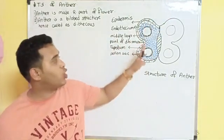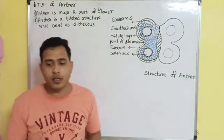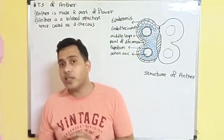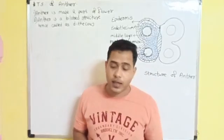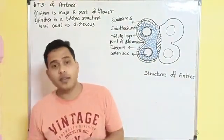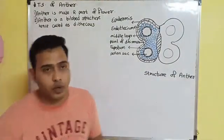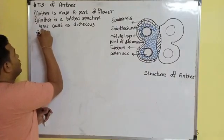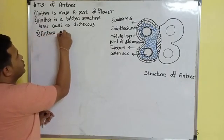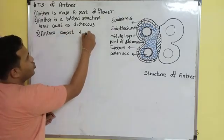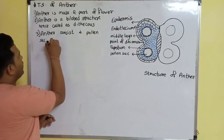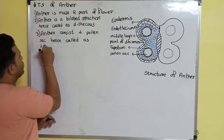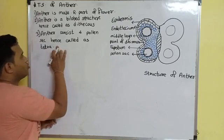So anther is a bilobed structure, that means it is a dithecous structure. Next, anther consists of pollen sacs — these circles are the pollen sacs. There are four pollen sacs. Anther consists of four pollen sacs, hence it is called as tetrasporangiate.